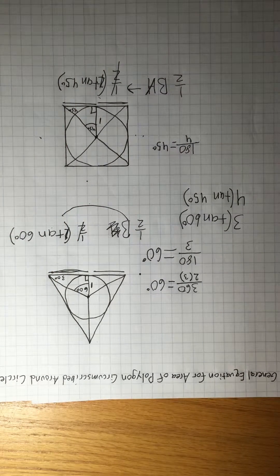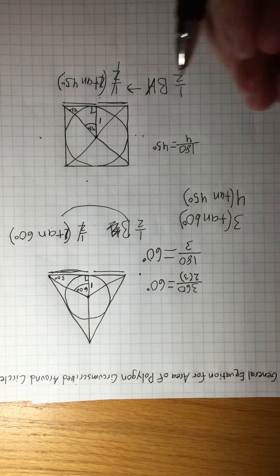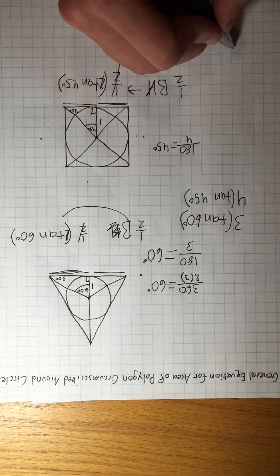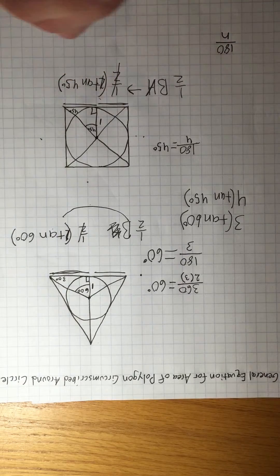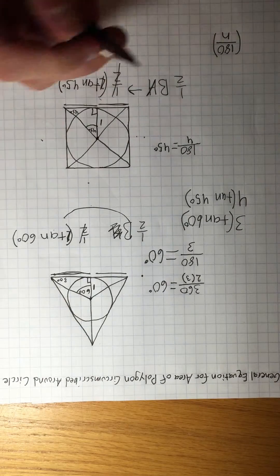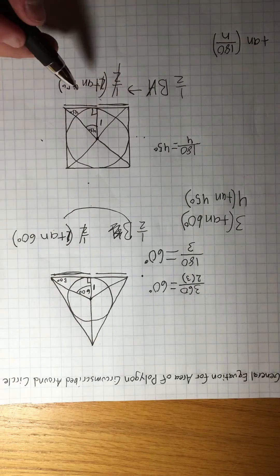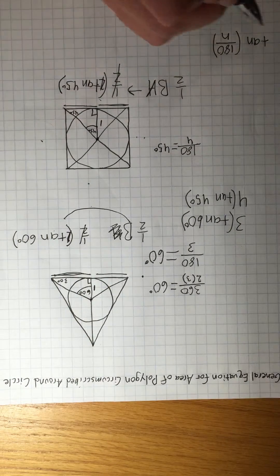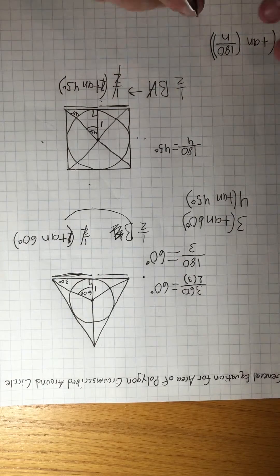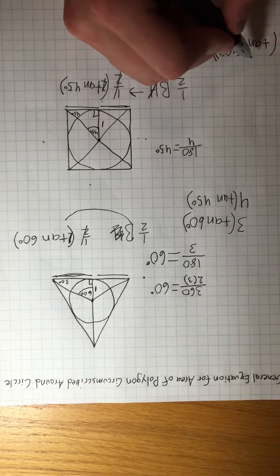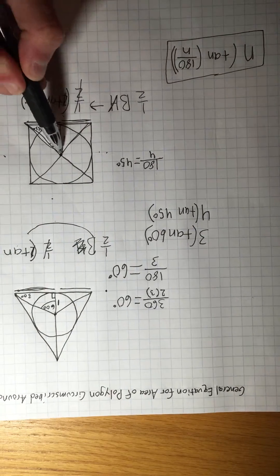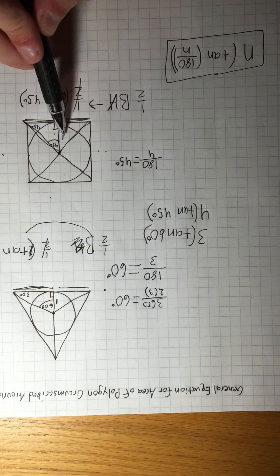Looking at both cases, you can see the general rule. The number of sides appears every time: first when finding the half-angle as 180 divided by N, and then you take the tangent of that angle. One half times 2 times tan(180°/N) simplifies — the halves cancel — giving tan(180°/N). Then you multiply by N sides, which is always the number of triangles. So the general formula is N·tan(180°/N) for the area of any polygon circumscribed around a unit circle.